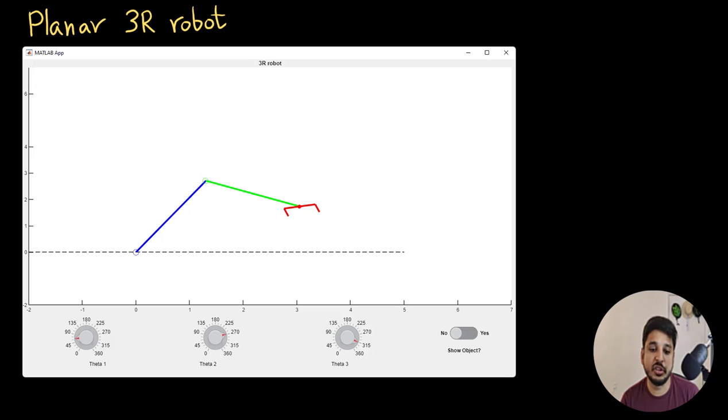I have made a small program to make it easy to understand. I have the same robot in this program. And at first, what I am going to do is, I am going to put the robot at zero configuration. Zero configuration is when all the robot parameters, which in this case are the three angles theta1, theta2 and theta3 are zero.